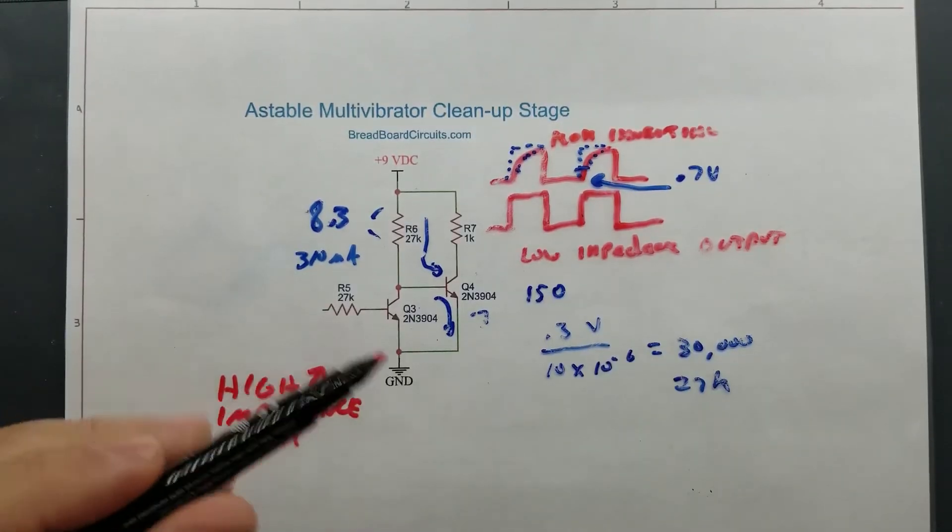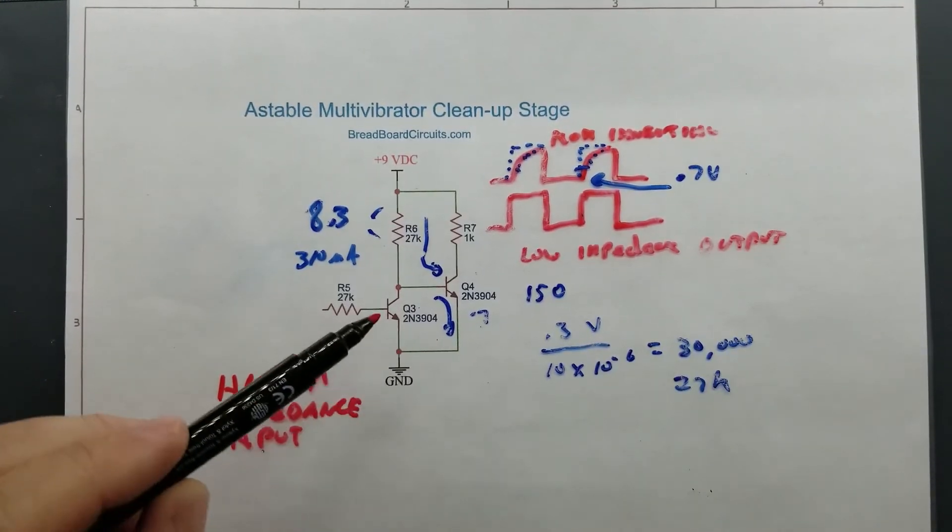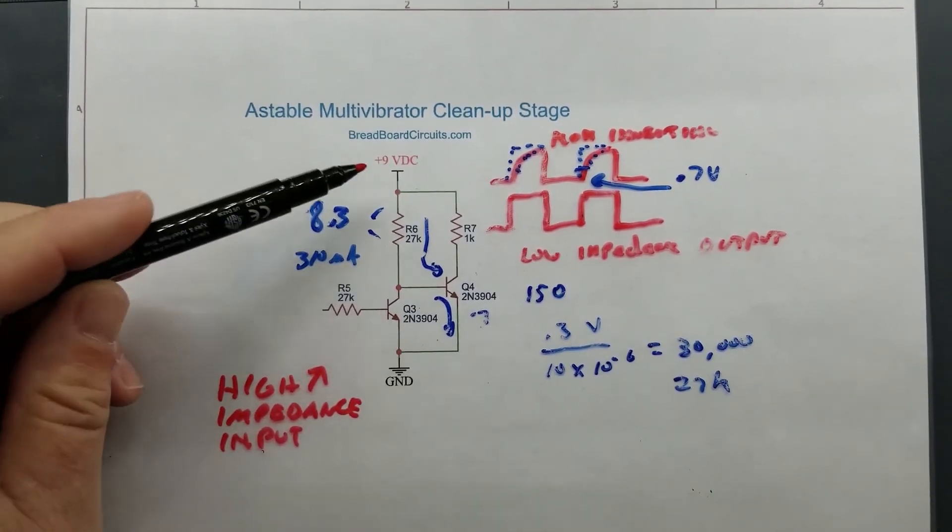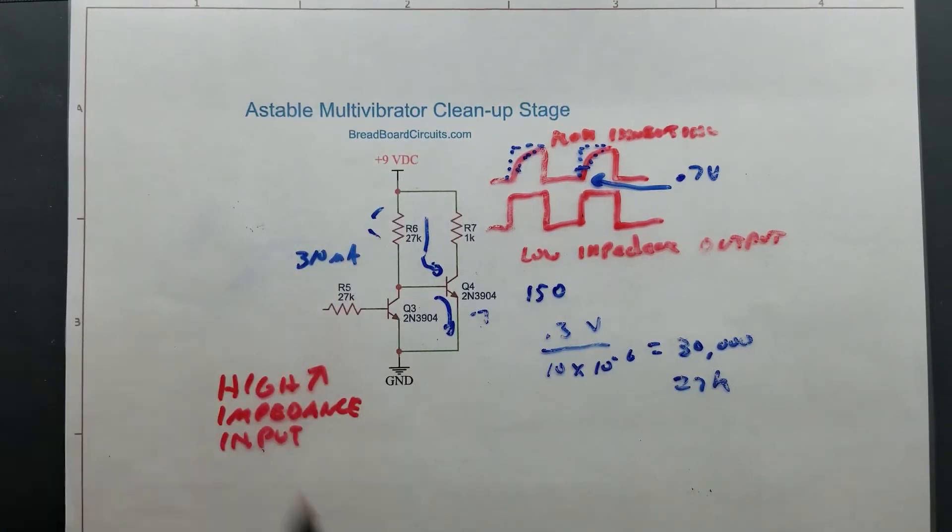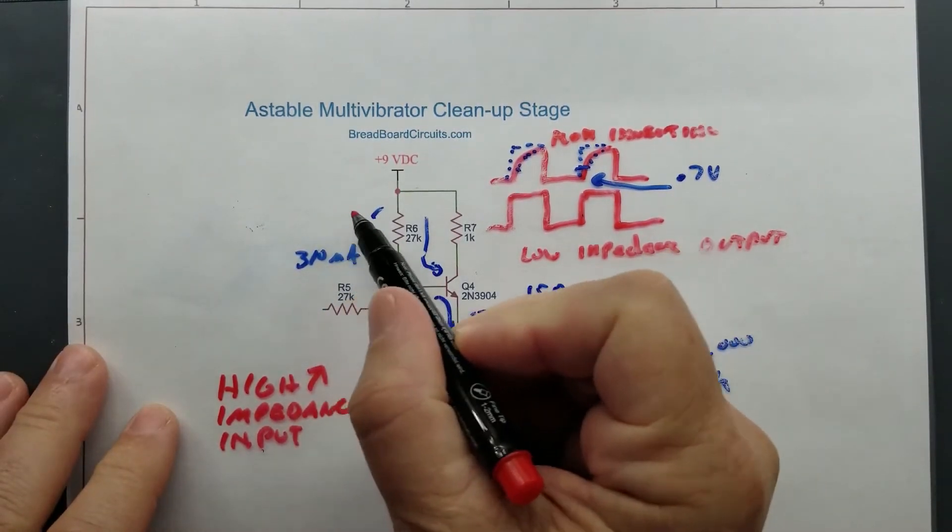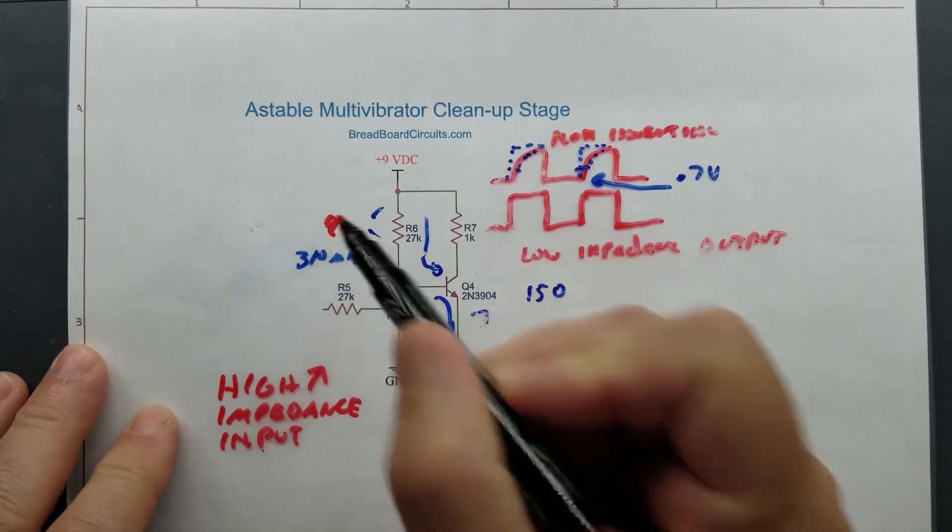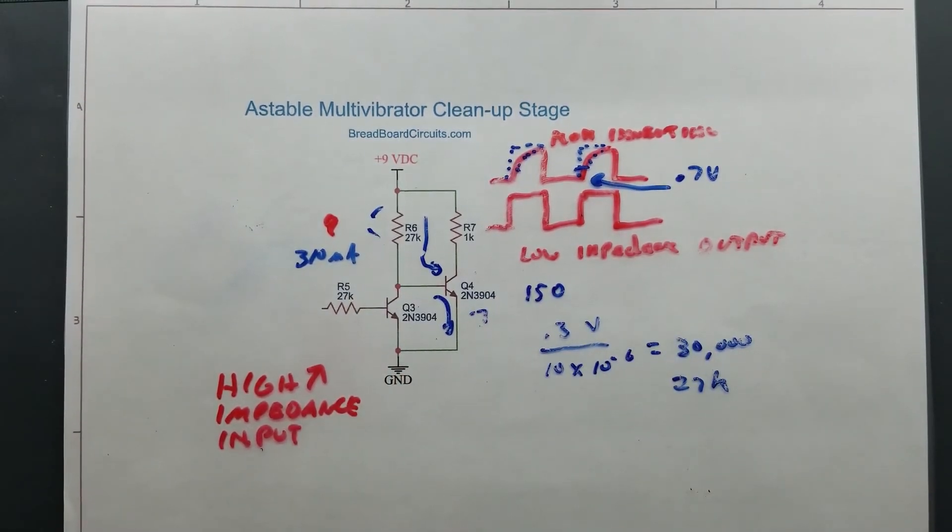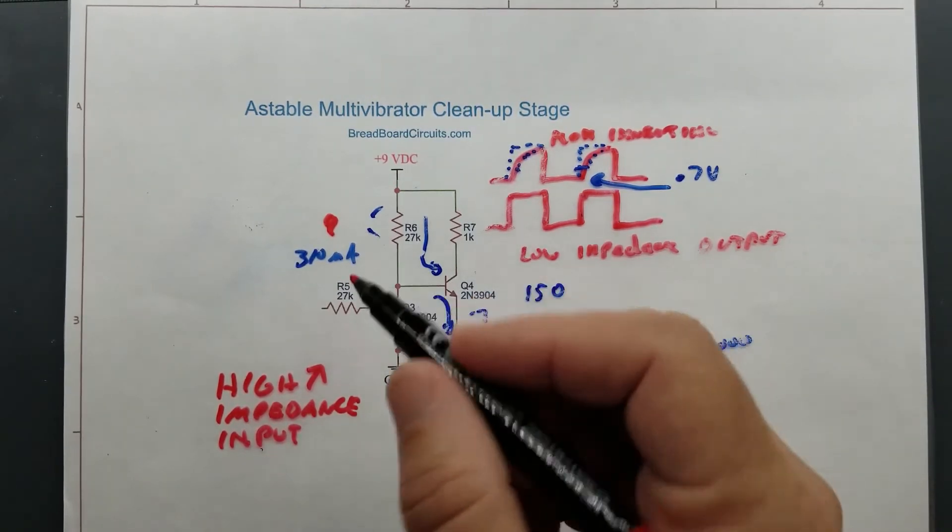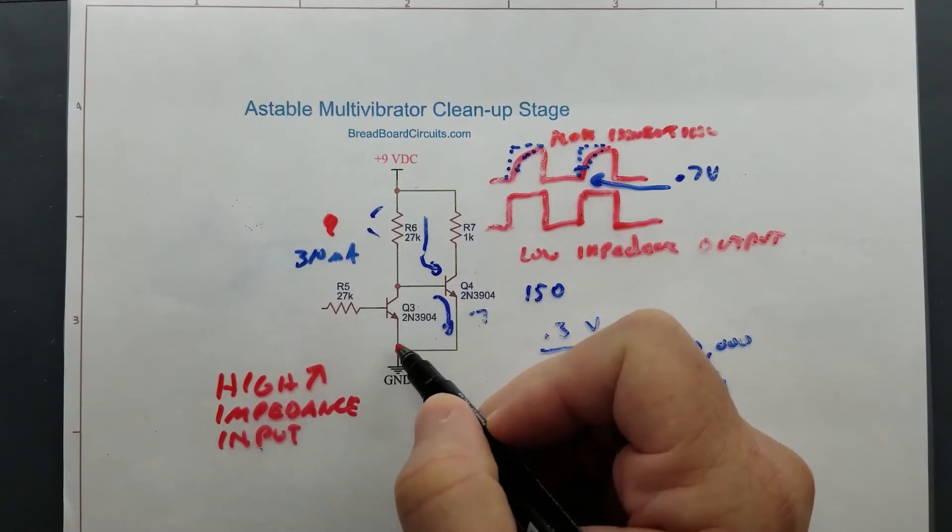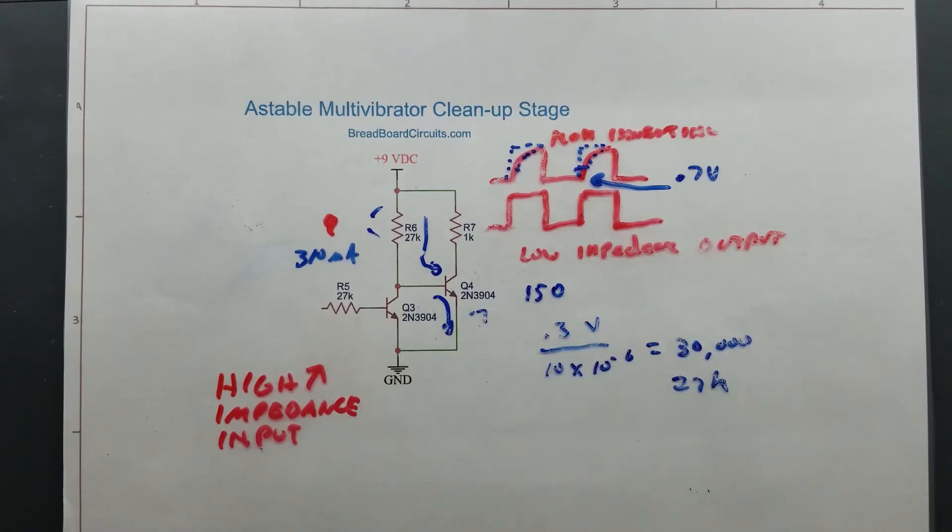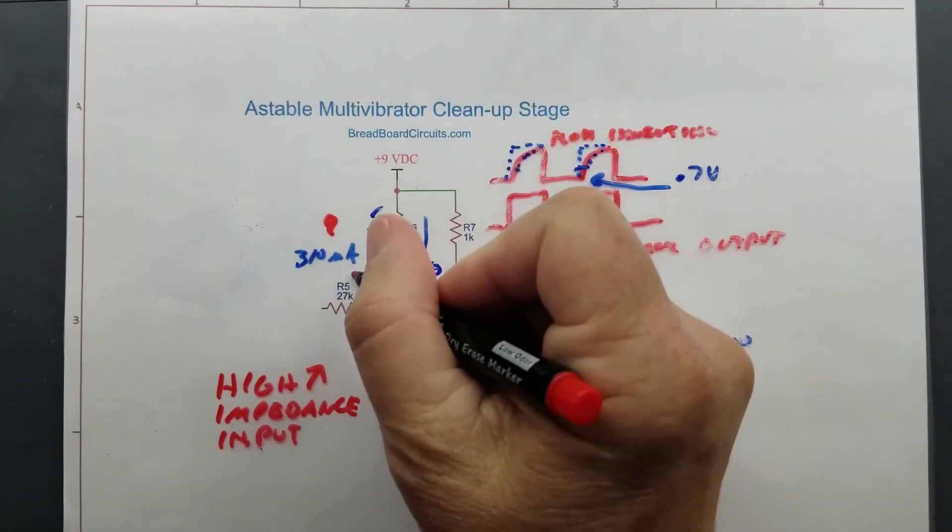Now for this transistor to go low, in order to go into saturation, it's going to need to pull this entire 9 volts down. So that's going to give us 9 volts here across this resistor. So we're going to take 9 volts, divide that by 27K, and that's going to give us 333 microamps going through this transistor here. So our collector current will be 333 microamps.